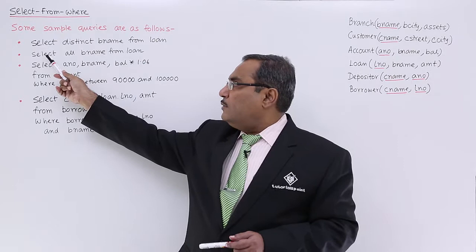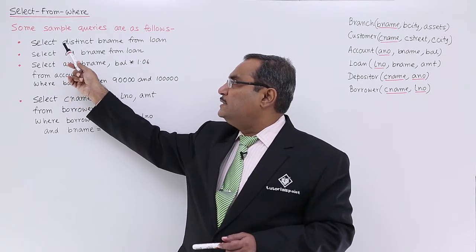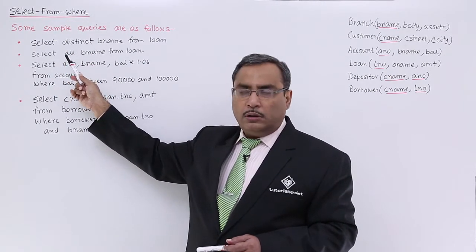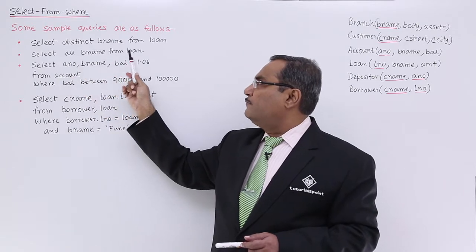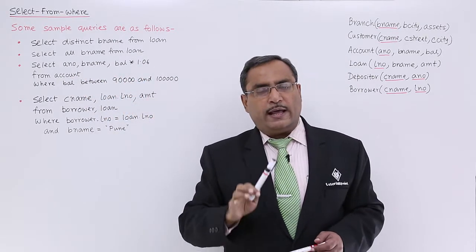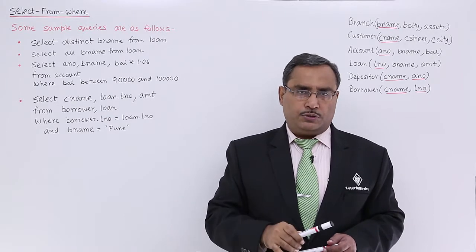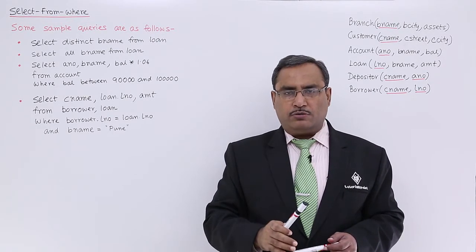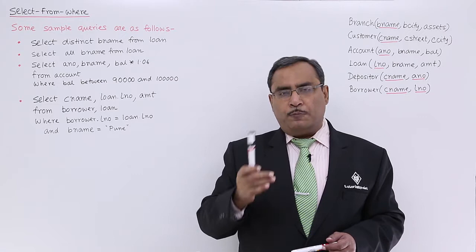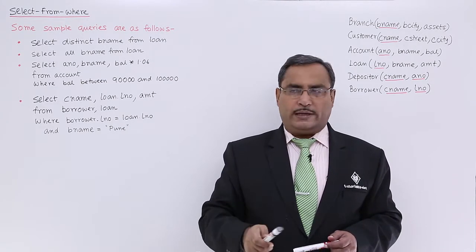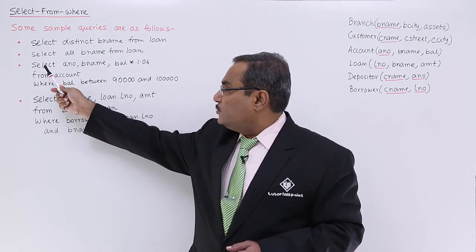But in the second query, we replaced distinct with the word all. Select all branch name from loan. Here we are allowing duplication of branch names in the output. If a branch name has repeated twice, then in the output also that branch name will come twice.